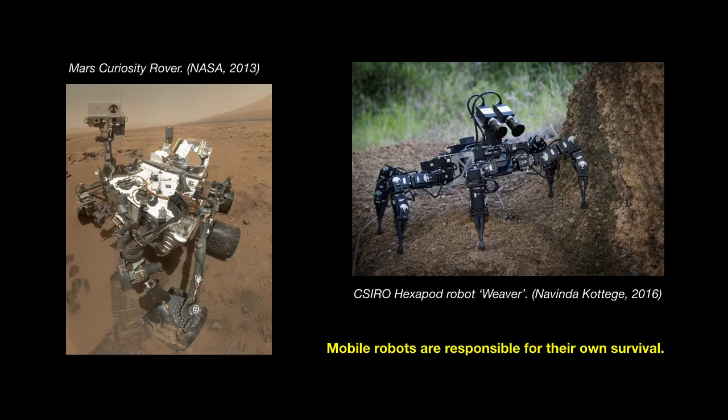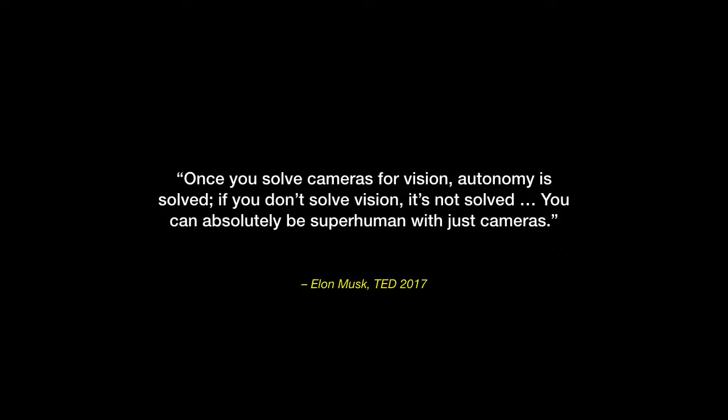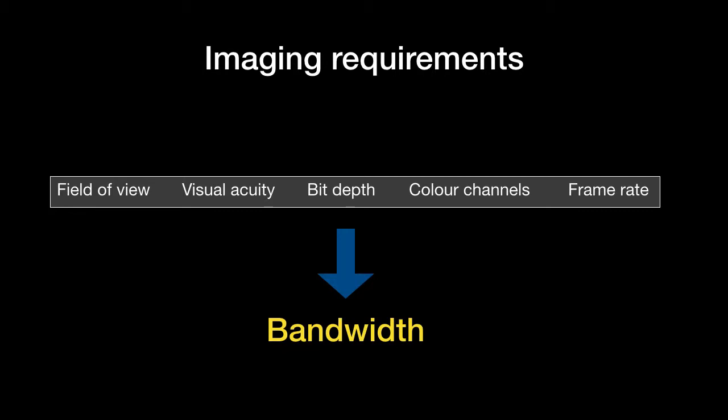Mobile robots can operate in unknown environments where communication is often limited, and the ability to obtain information about their surroundings is critical to their survival. Cameras can provide robots with large amounts of this data quickly and reliably, but our robots have limited processing power and this bandwidth must satisfy several competing requirements.